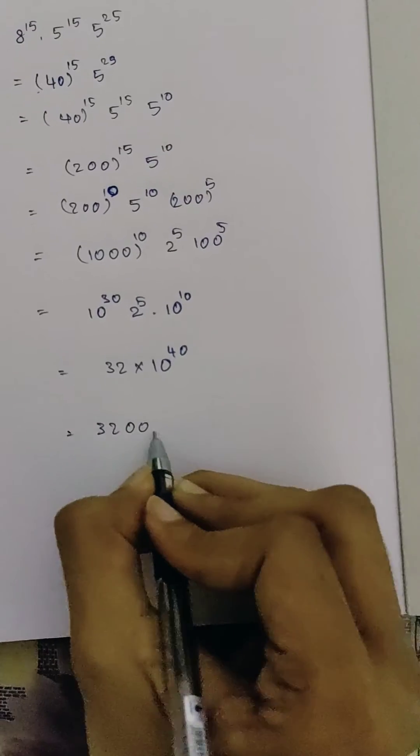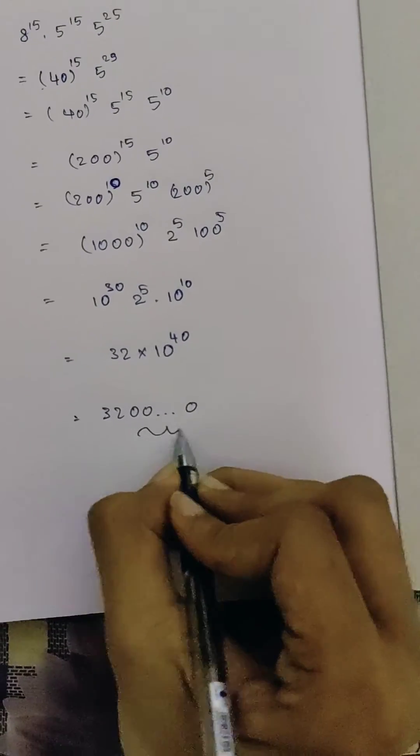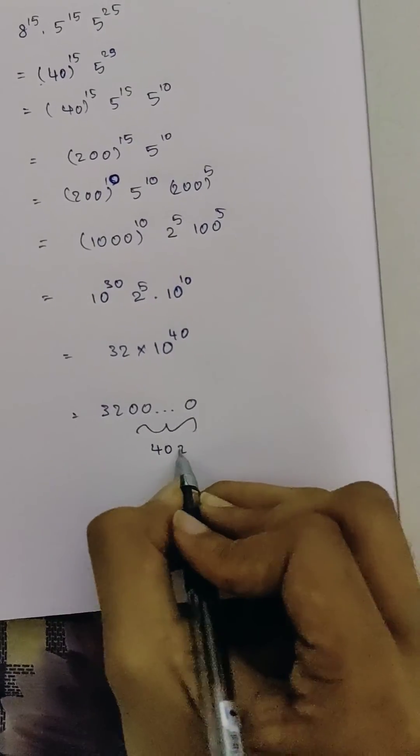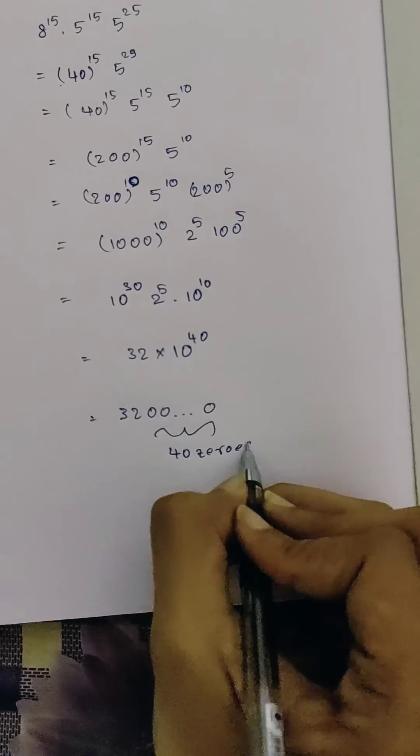Now it is 32 and just 40 zeros, which means a total of 42 digits.